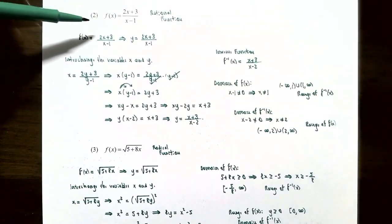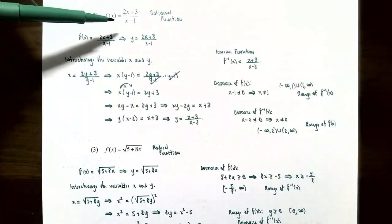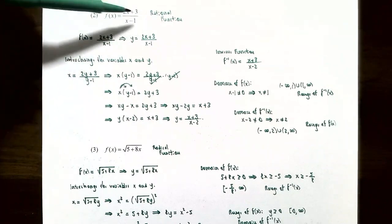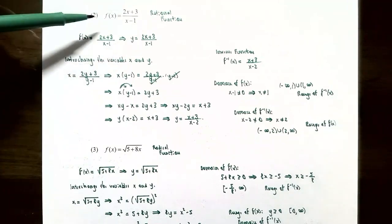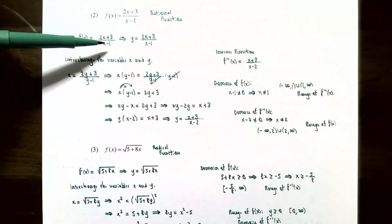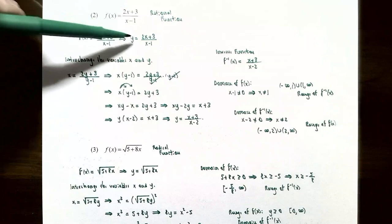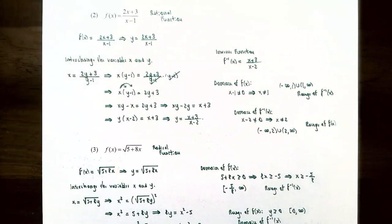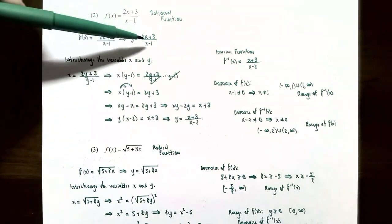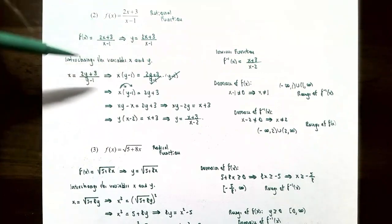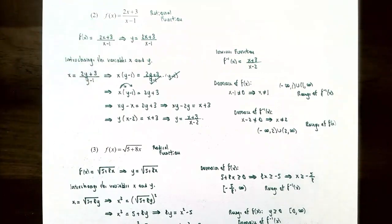Number two: f of x equals 2x plus 3 all divided by x minus 1. This is a rational function — a fraction of two linear functions, with 2x plus 3 in the numerator and x minus 1 in the denominator. Let's go through the same four steps. Replace f of x with y so we only have variables x and y. Now interchange x and y: the y becomes x, and every x becomes y, giving x equals 2y plus 3 all divided by y minus 1. If we can solve this for y, we'll have the inverse function's formula.